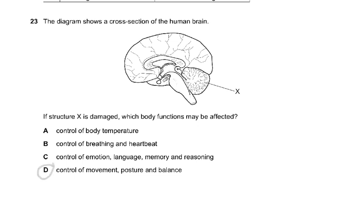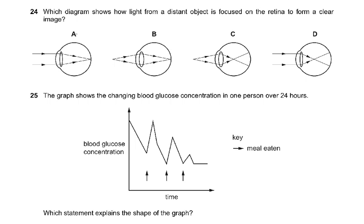Question 24: the diagram shows how light from a distant object is focused on the retina to form a clear image. Remember the mnemonic — distance, less convex. The less convex options are these, but one is wrong because it's crossing over incorrectly. The image has to form on the fovea, so that is why the answer is A.